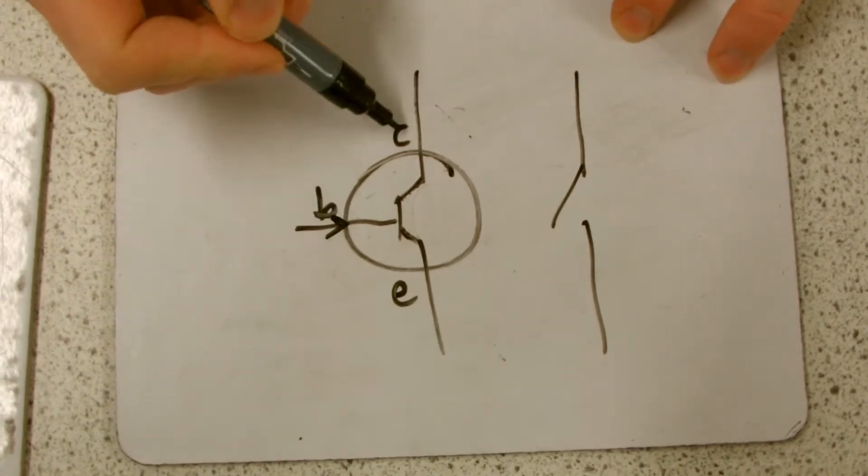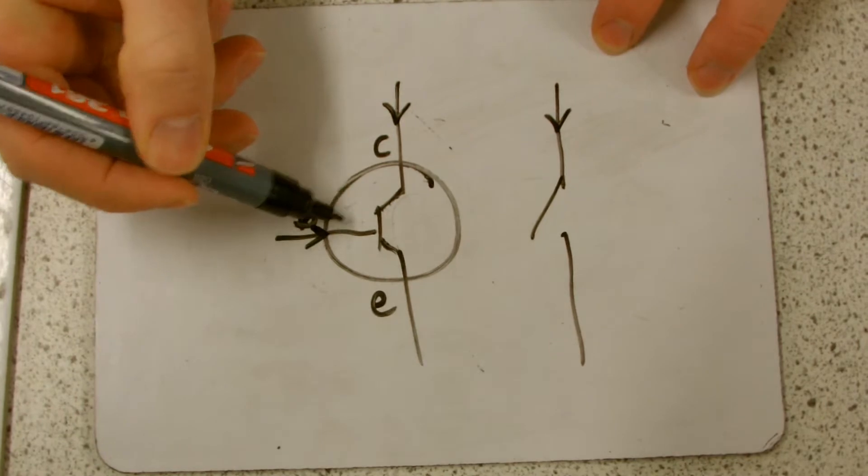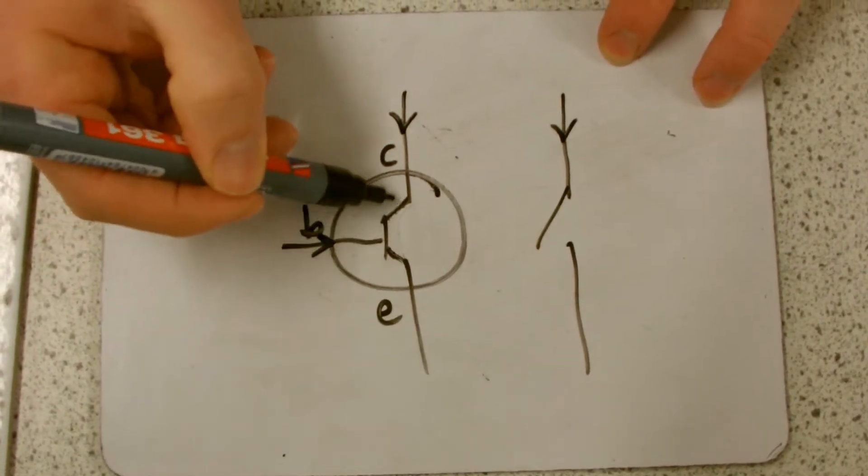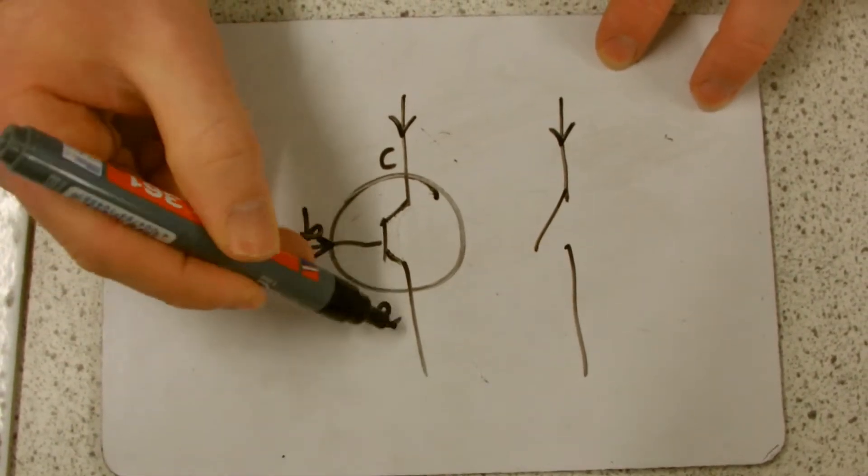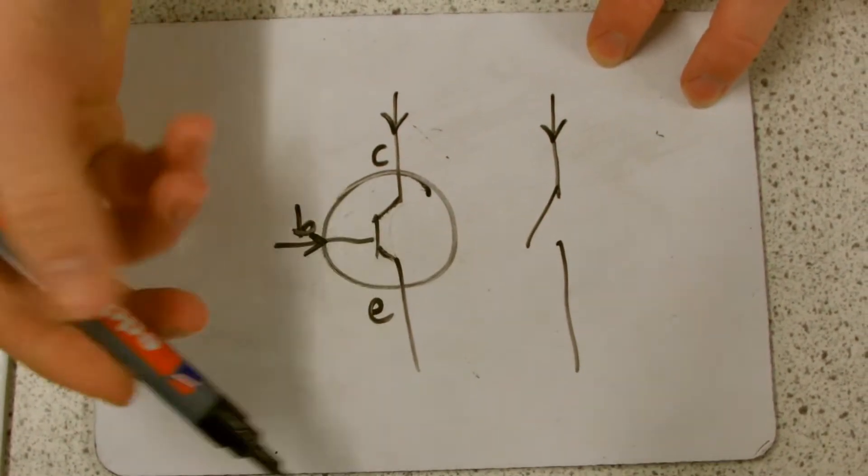What do all these symbols mean? Well, C is the collector, that's where the current is coming in. B is the base current, so the base current allows the current to flow from C to E, and E is the emitter, that's where the current comes out.